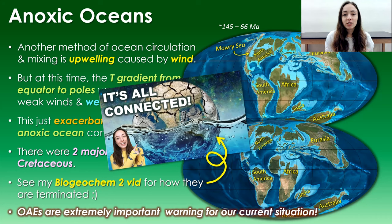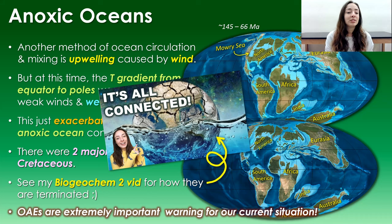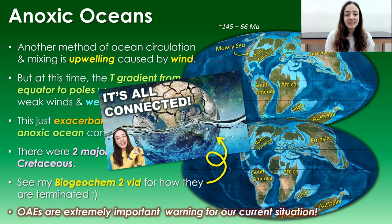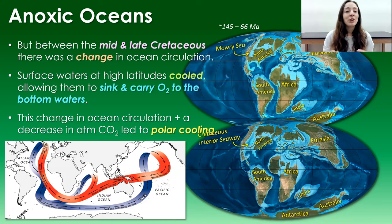The bigger importance of OAEs is that they are extremely important warnings for our current warming trend. Understanding when they occurred, why they occurred, how they occurred, and how long they lasted in Earth's history is critical for understanding our oceanic future. The ocean controls a lot of Earth's processes, and runaway ocean anoxia triggers chain extinction events. Studying OAEs helps us understand and avoid the conditions that cause and exacerbate them.